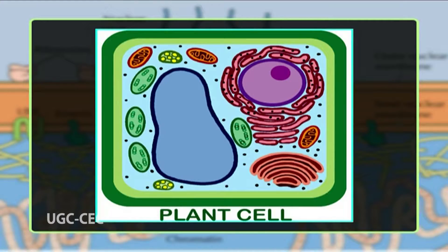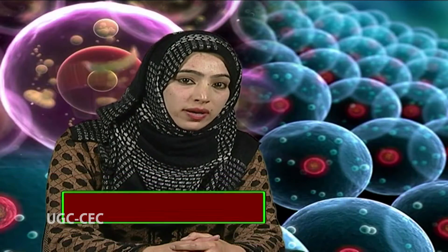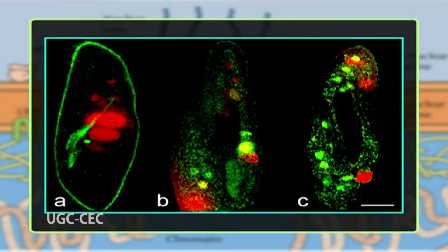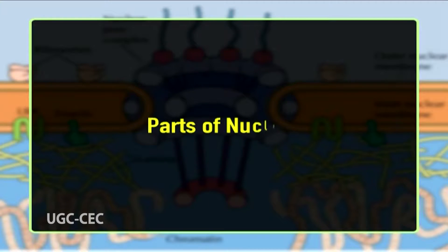Generally all cells are uninucleate or mononucleate, but in certain cases a binucleate condition occurs, as in Paramecium caudatum, where one nucleus is the smaller micronucleus and the other is the larger macronucleus or meganucleus. In a few others, a poly- or multinucleate condition exists, as in Opalina and striated muscle fibers.